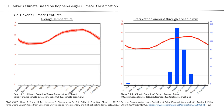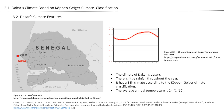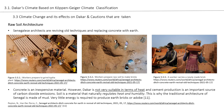Dakar has a BSH climate type according to the Köppen climate classification, meaning it has a semi-arid, semi-desert climate with little rainfall through the year. The annual average temperature is 24 degrees Celsius. Senegalese architects want to review all techniques and replace concrete with soil in line with climate change. Concrete is very cheap but not suitable for Dakar's heat, and cement production is an important source of carbon dioxide emissions. Soil is a material that naturally regulates heat and humidity, which is why traditional Senegalese architecture is made of mud. Very little energy is required to produce earth bricks and adobe.